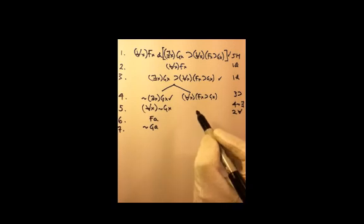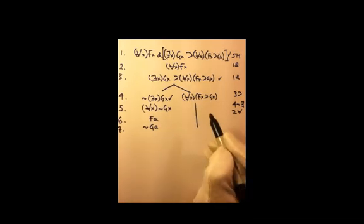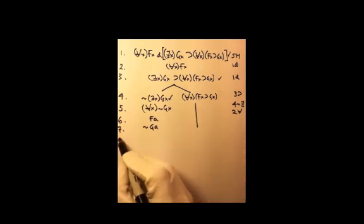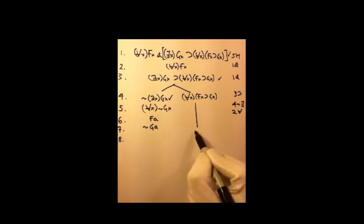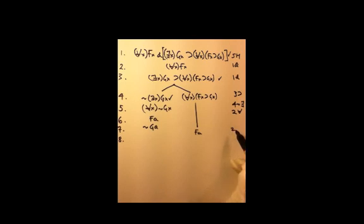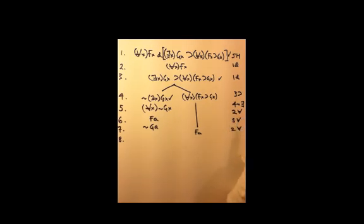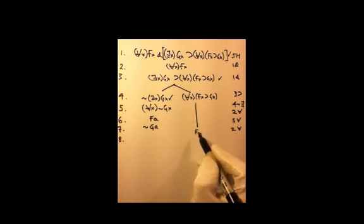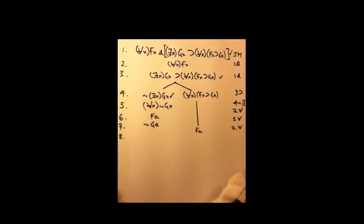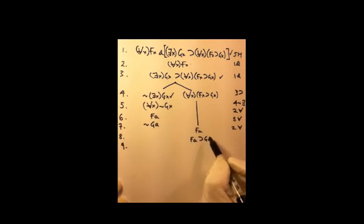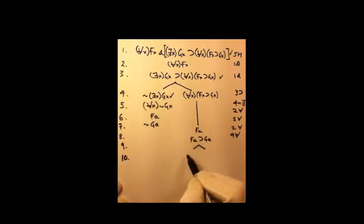Just for completeness, let's do the other branch as well. On this branch I have two universal quantifiers. I need to do f(a) from line 2 by universal quantifier decomposition. Line 7 came from line 5 by universal quantifier decomposition. Then I want line 9, which is f(a) ⊃ g(a), from line 4 by universal quantifier decomposition. This branch again gives not-f(a) on one side and g(a) on the other, so we actually have two completed open branches.